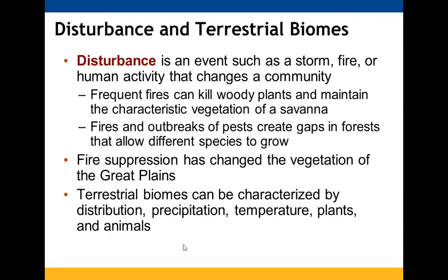Disturbance — such as storms, fire, or human activity — causes changes in a community. Frequent fires can kill woody plants and help maintain savanna vegetation. Fires or pest outbreaks create canopy gaps in forests, allowing different species to grow. Fire suppression has changed the vegetation present in the Great Plains.